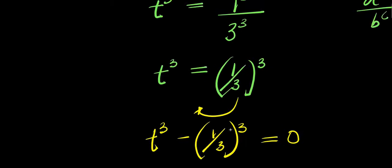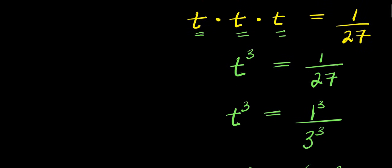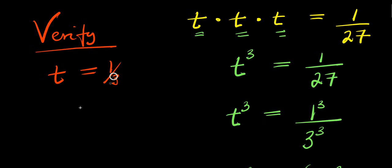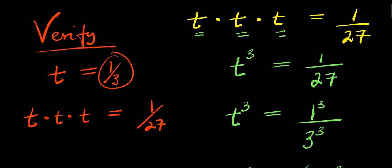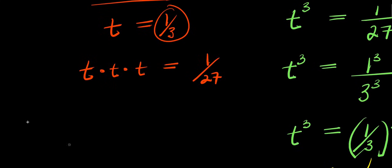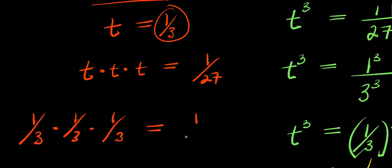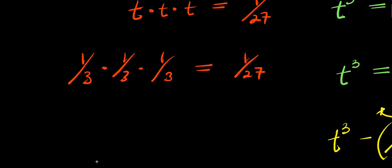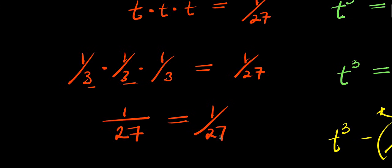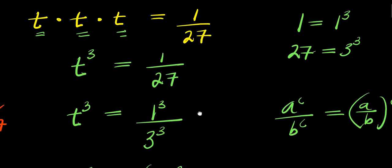So we can verify this by inserting this particular value for t. t equals 1 over 3: that is t times t times t equals 1 over 27. We substitute: 1 over 3 times 1 over 3 times 1 over 3 equals 1 over 27. Multiplying the numerators: 1 times 1 times 1 equals 1; the denominators: 3 times 3 times 3 equals 27. So 1 over 27 equals 1 over 27. Both sides are the same, which shows our solution is correct. That is it. Thank you and goodbye.